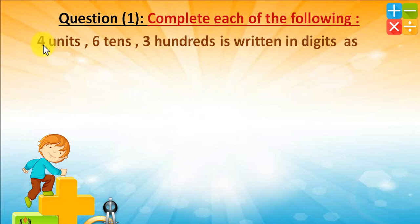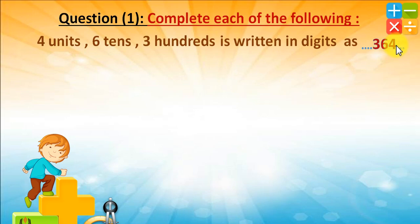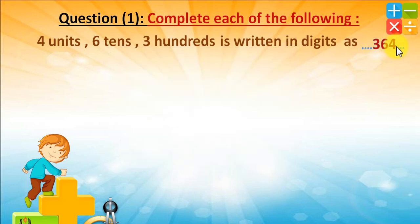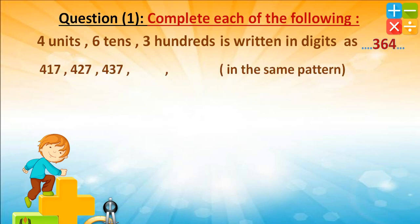We notice: 4 for units, 6 for tenths, 3 for hundreds. We know the place of units, tens, and hundreds. We put each digit in its place, so the number together is 364. The next one: 417, 427, 437.